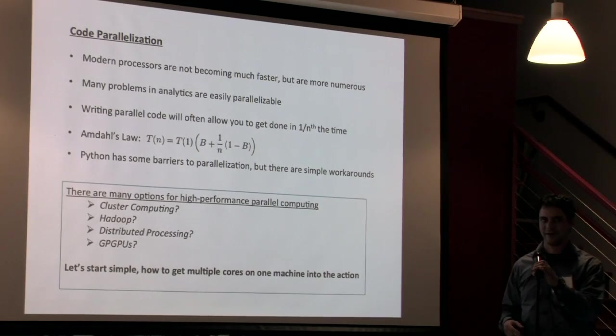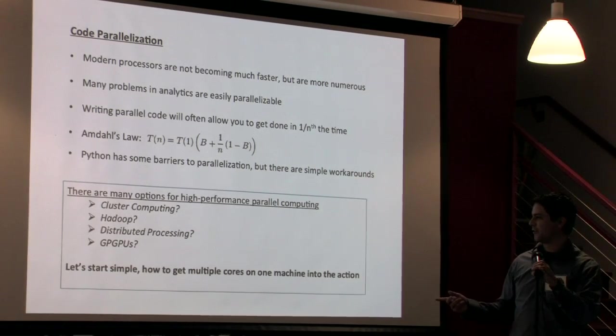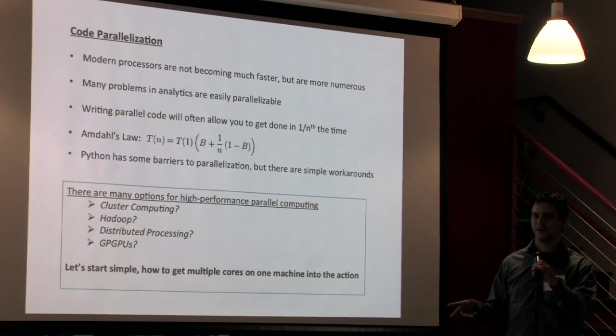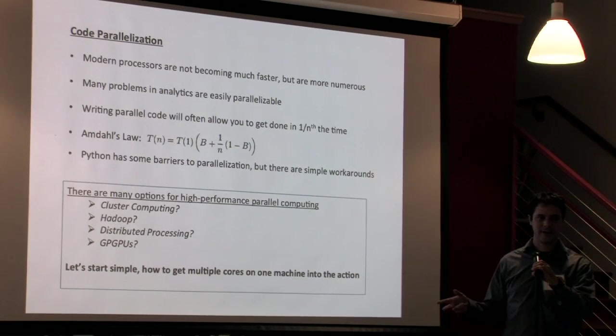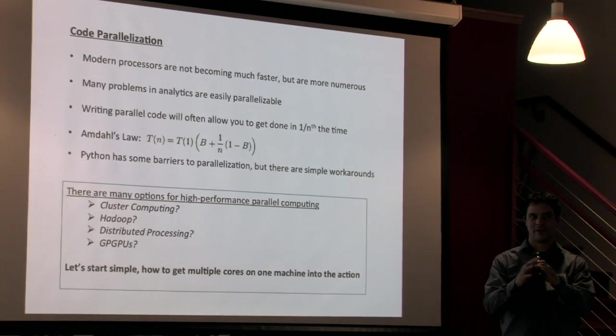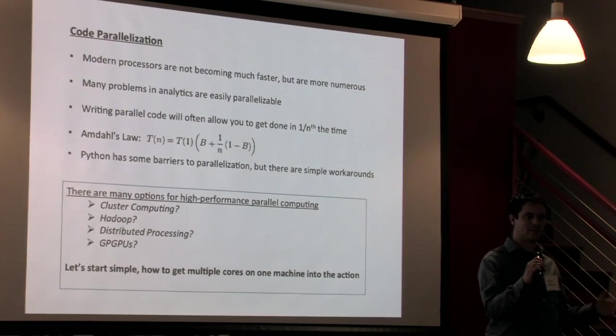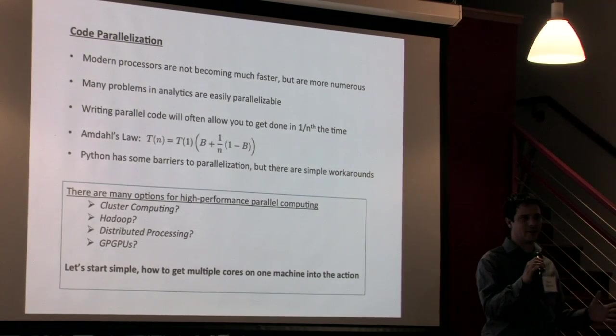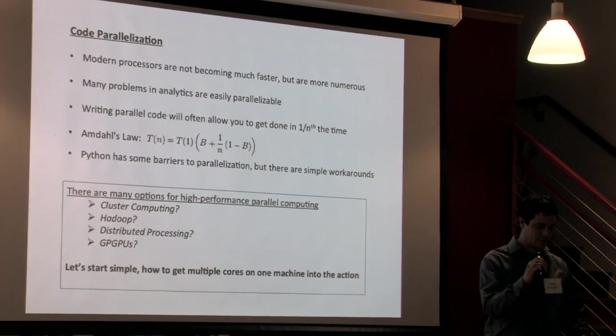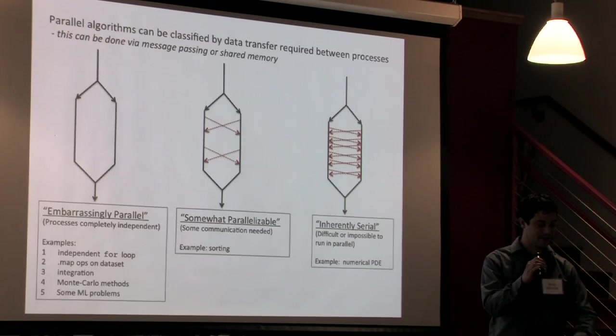But for this talk I just want to start simple and tell you if you're using either maybe your home machine that has four, six, eight cores on it or maybe you have some sort of high performance server at work that you do a lot of your work on that maybe has eight to 24 cores on it, how can you get all those into the action for code that you previously had that you were just running serial operations on.